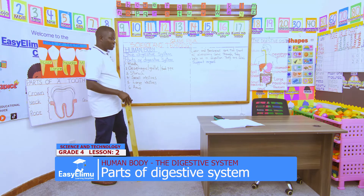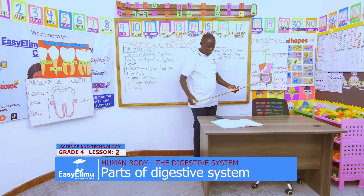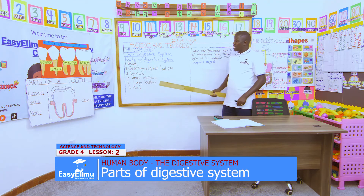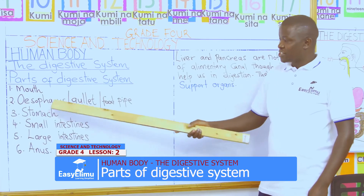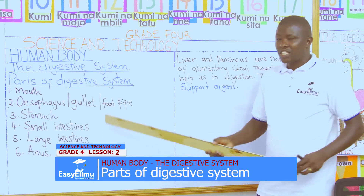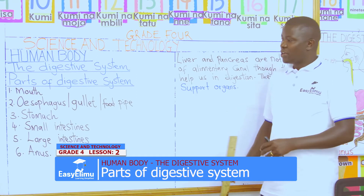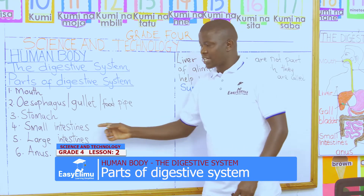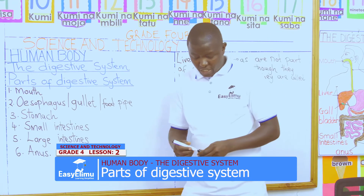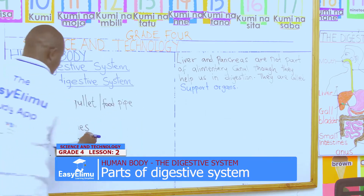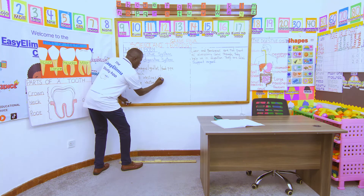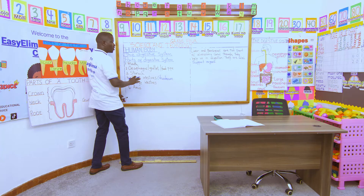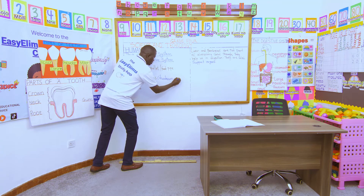So these are the parts used in digestion. In our groups, let us read from our board what we have written from the chart. We have the mouth, we have the oesophagus — also called the gullet or the food pipe. We have the stomach. We have the small intestines, which are divided into two parts: the upper part called the duodenum and the main lower part which is called the ileum.